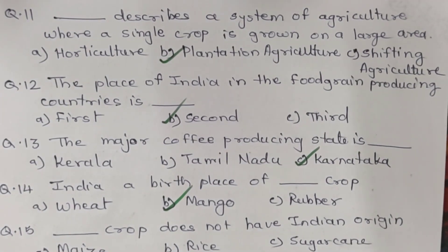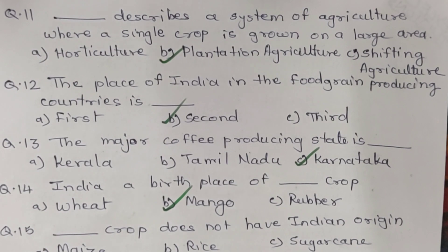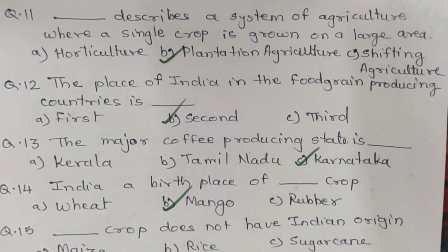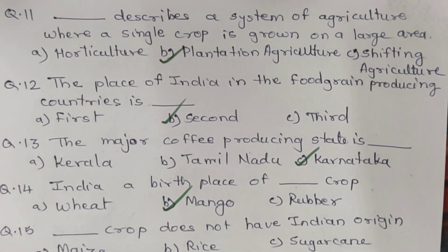Question 11. Which term describes a system of agriculture where a single crop is grown on a large area? A. Horticulture. B. Plantation agriculture. C. Shifting agriculture. And the correct answer is B. Plantation agriculture.